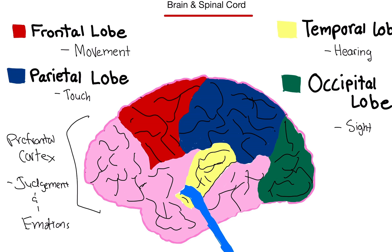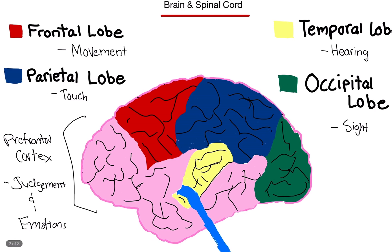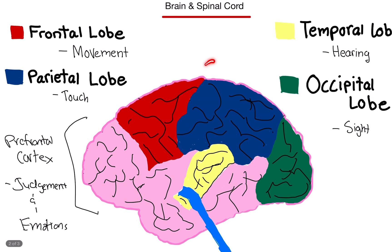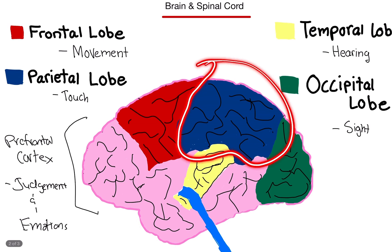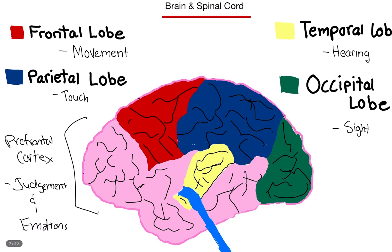The next lobe is the parietal lobe. This lobe in blue is for touch. So whenever you feel something on your fingers, for example, anything relating to that — if you feel something in your leg, if you feel something in your back — any kind of touch gets processed in the parietal lobe.